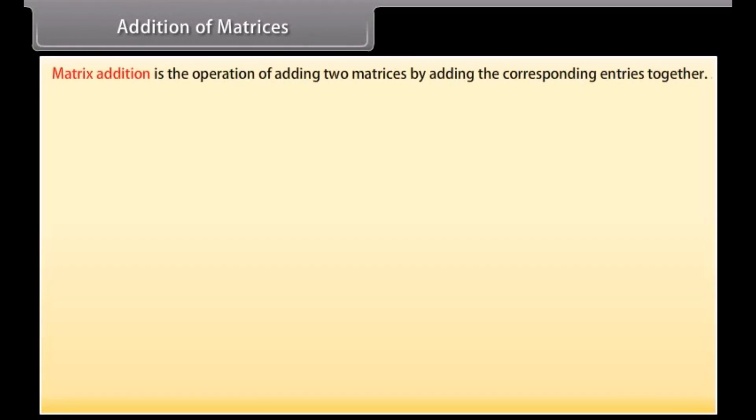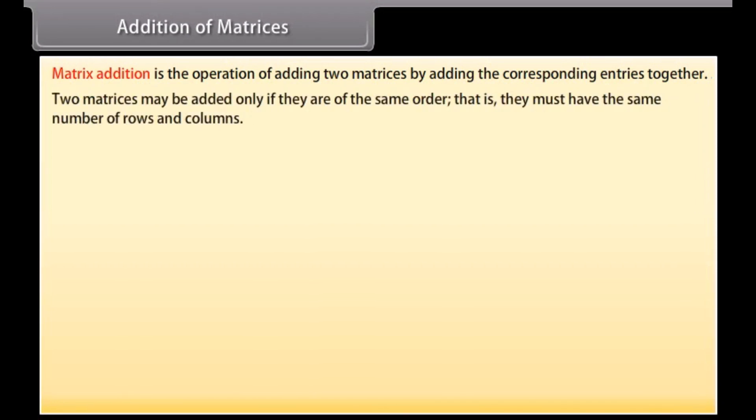Addition of matrices. Matrix addition is the operation of adding two matrices by adding the corresponding entries together. Two matrices may be added only if they are of the same order. That is, they must have the same number of rows and columns. Let's add these matrices.